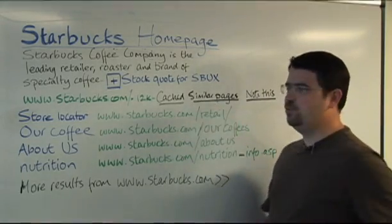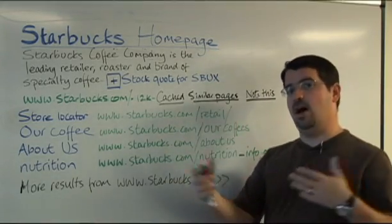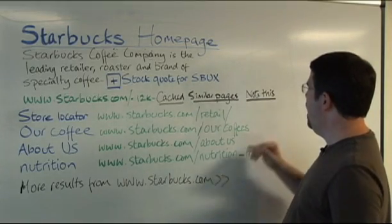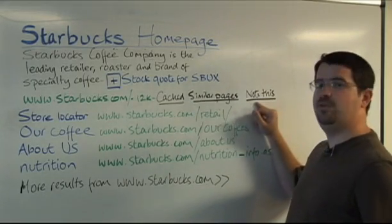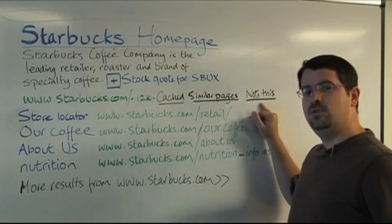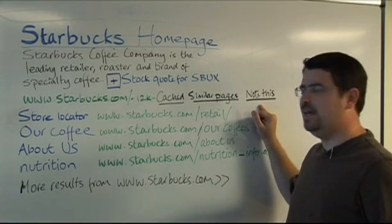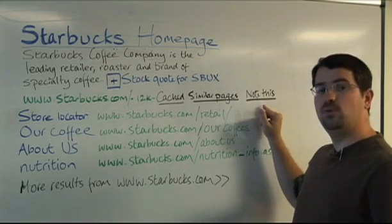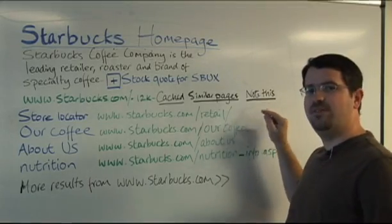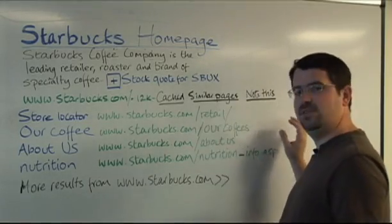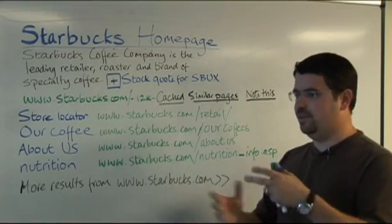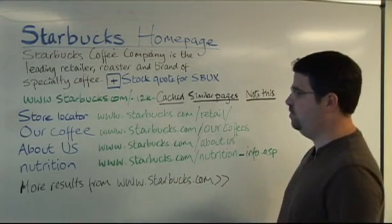'Similar pages' shows you related pages to Starbucks — maybe other businesses or other pages you'd be interested in. And a lot of times if you're logged into Google, you'll see 'Note this.' If you're a student or doing research, this is really handy — it works with Google Notebook. All it does is save this off so that as you're doing research, you can save this result and come back to it later and aggregate everything together.